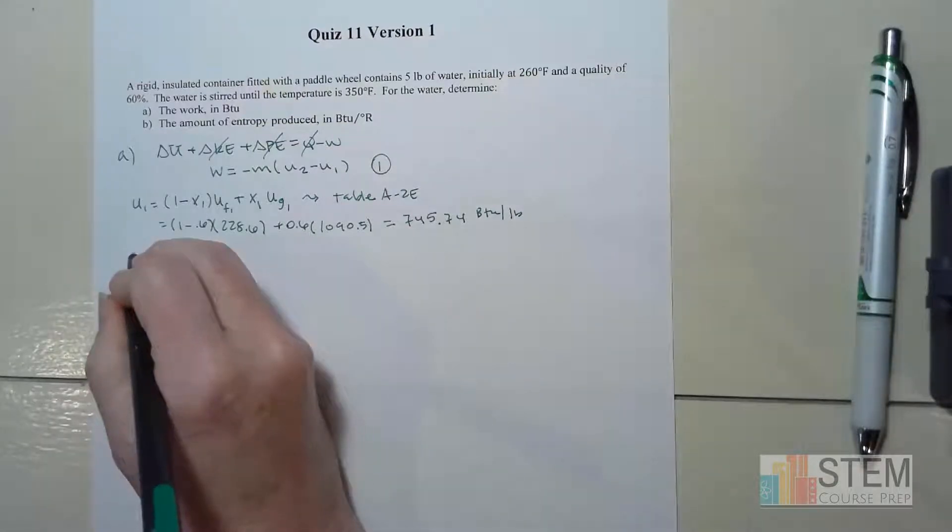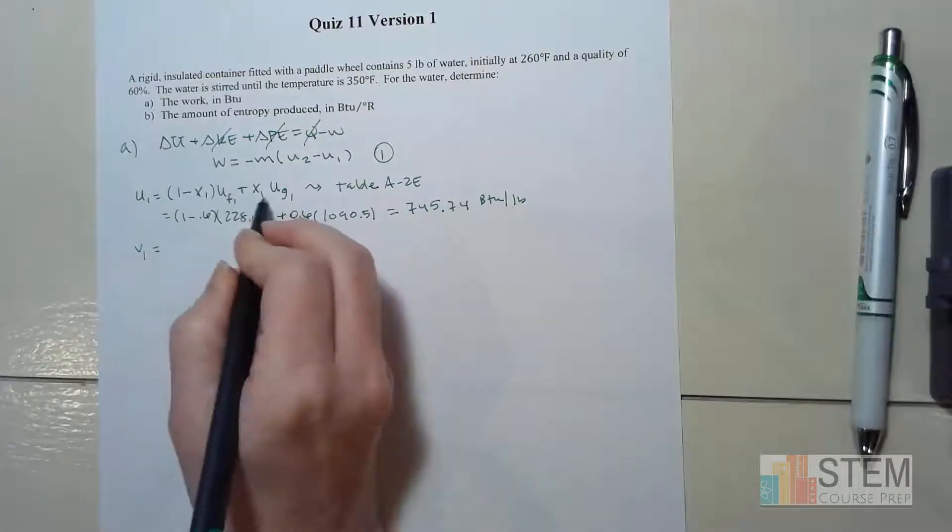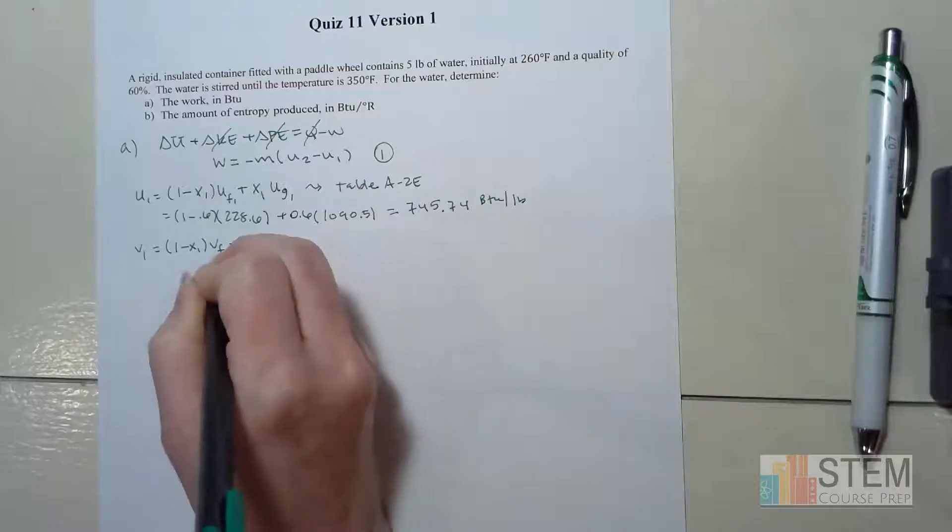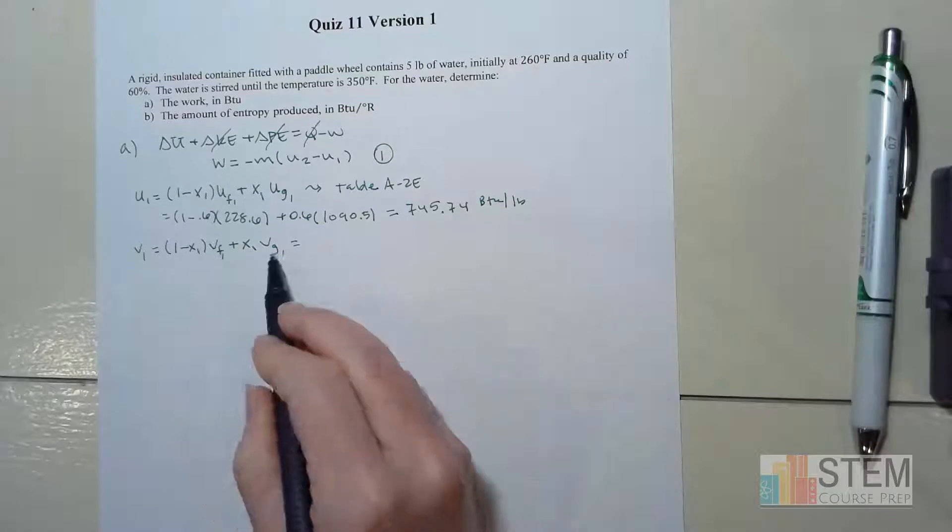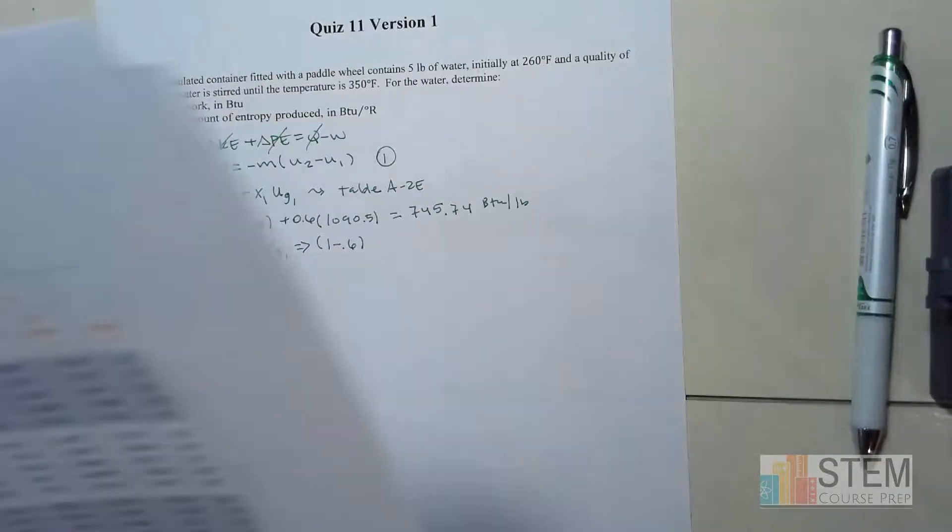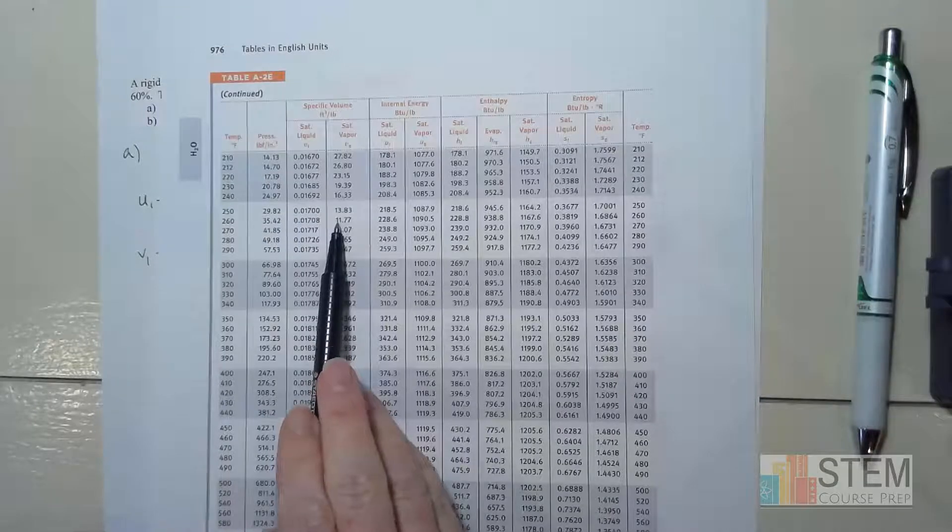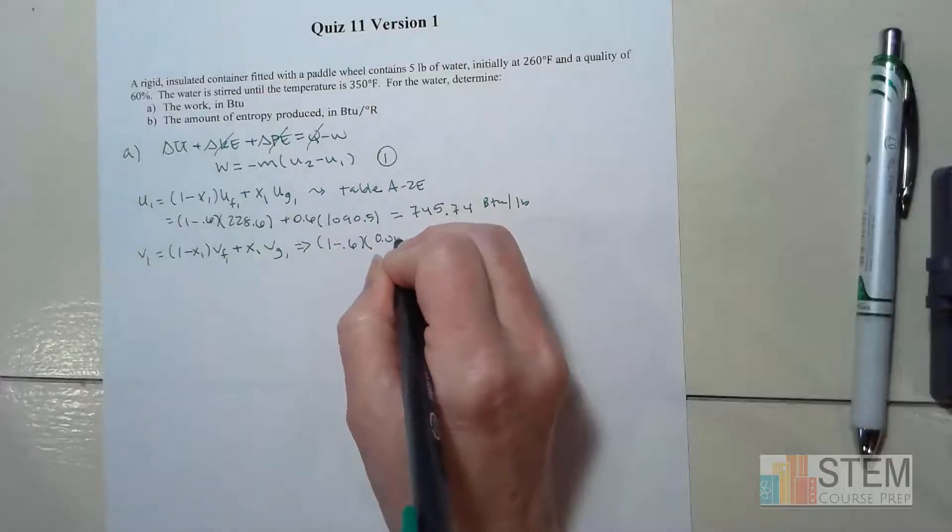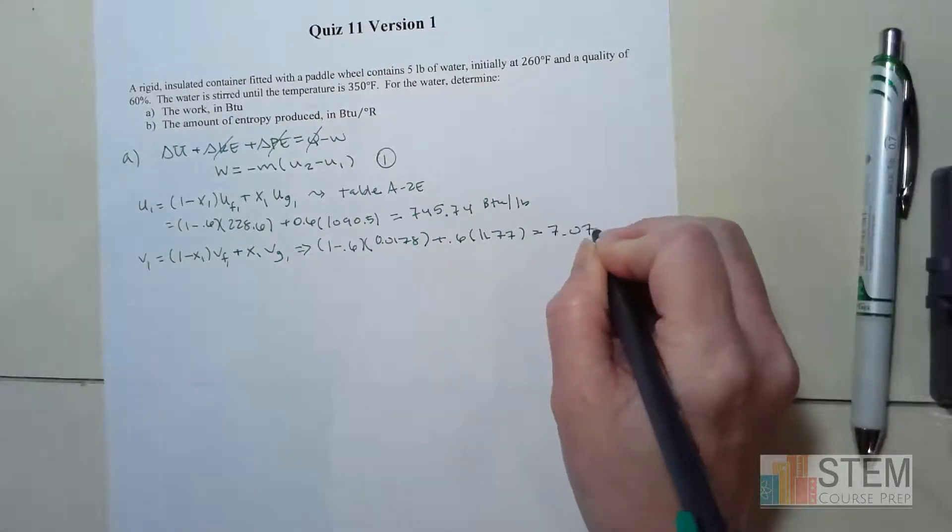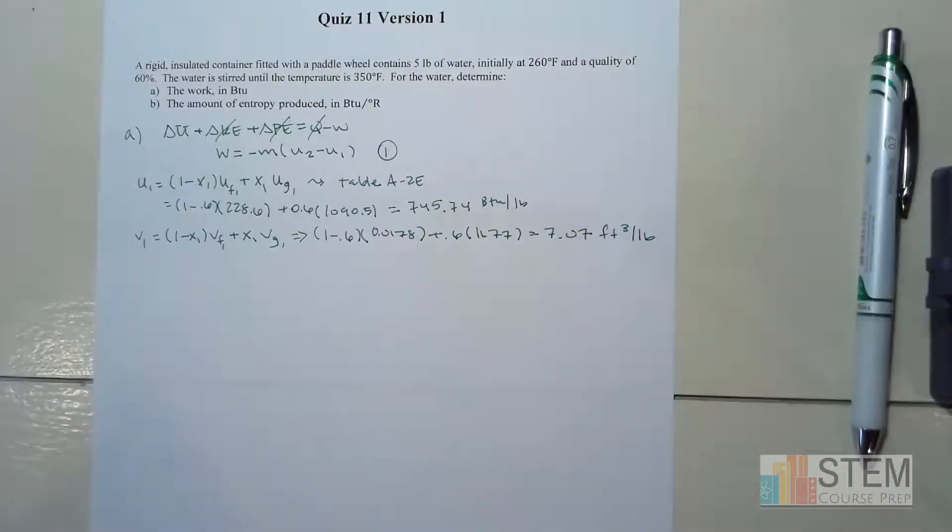Now let's find V1 because we're going to need it. V1, our specific volume, has a similar equation: (1 - x1) times Vf plus x1 times Vg, all at state 1. Using the same table, we get (1 - 0.6) times 0.01708 plus 0.6 times 11.77, giving us V1 = 7.07 cubic feet per pound.